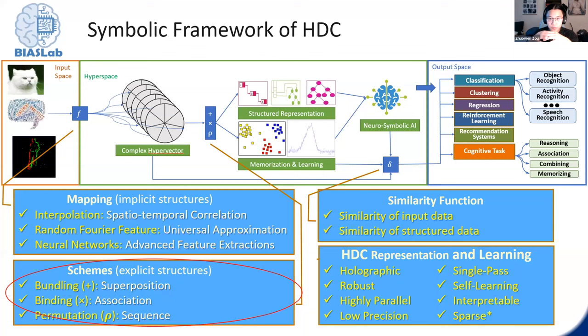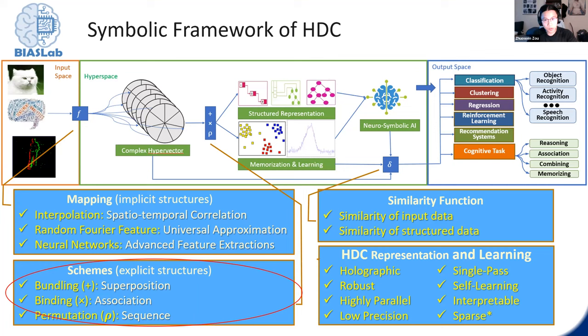To understand the scope of HDC in the context of artificial intelligence, a quick overview of the symbolic framework for HDC is given. Starting from mapping different types of data onto the hyperspace in ways that satisfy certain hypervector properties, different types of mapping allow preservation of different types of correlation. This allows HDC models to go beyond simple memorization. With the data hypervectors, explicit structures are constructed: bundling creates sets, binding creates key-value associations, and permutation gives a sense of order and helps create sequences.